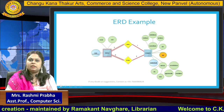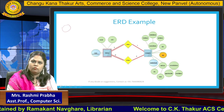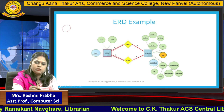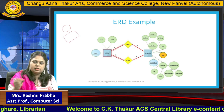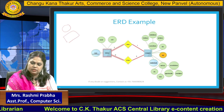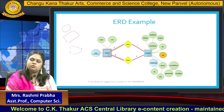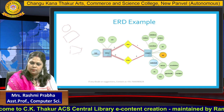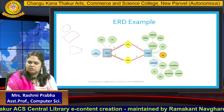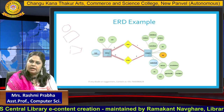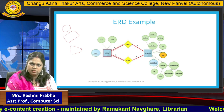Now, in this diagram you can see there are lots of symbols. One symbol is known as the oval, and this oval is used to represent an attribute. The next symbol is a rectangle, which is used to represent an entity. Then we have a diamond shape, which is used to represent a relationship. The full form of ERD is Entity Relationship Diagram — a diagram used to represent relationships between different entities.